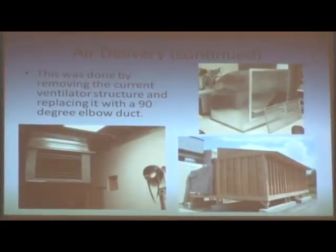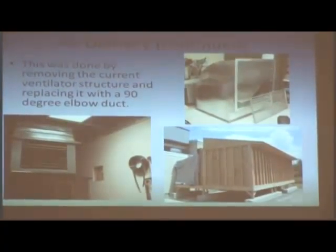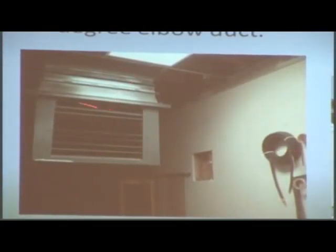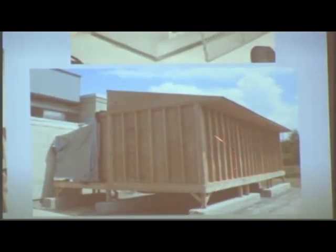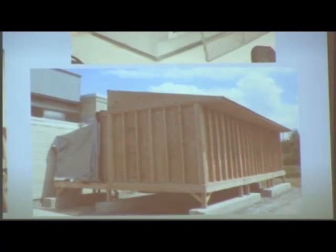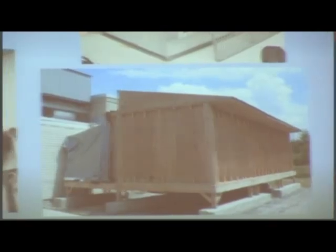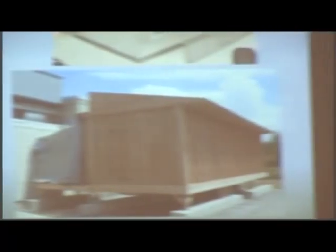This was done by removing the current ventilation diffuser and replacing it with a 90-degree elbow duct. The original system was a metal box that distributed air evenly. On the other side of the wall is the exterior of the building, where work has been ongoing for the past year. By replacing the diffuser with the elbow duct, we can redirect the airflow through the wall and into the tunnel.